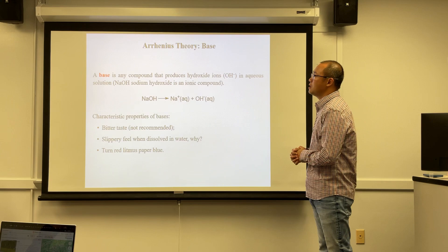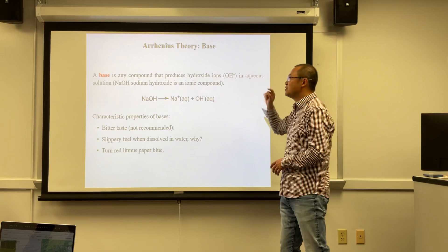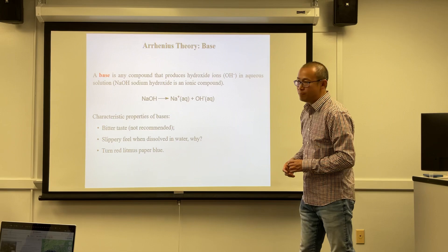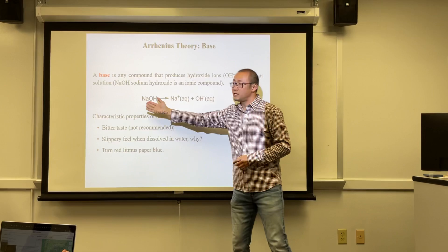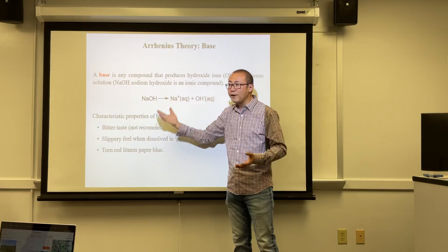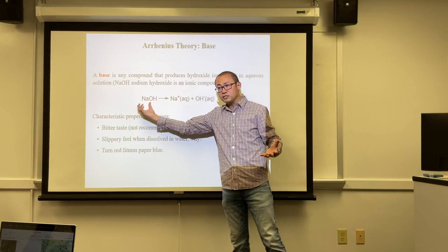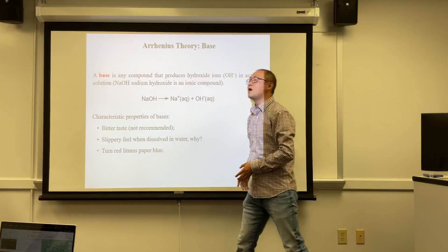Now let's look at bases. In the Arrhenius theory, bases are defined as compounds that produce hydroxide ions (OH−) in aqueous solution. Most bases are metal hydroxides such as sodium hydroxide (NaOH), which is an ionic compound containing Na+ and OH−. When dissolved in water it dissociates completely into sodium ion and hydroxide ion. Compounds like this are called bases.